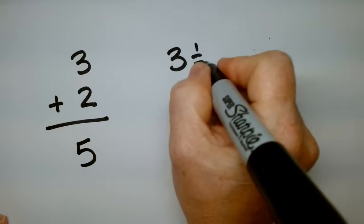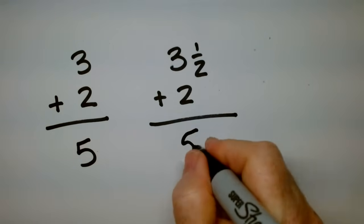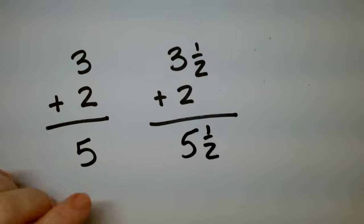What is 3 and a half plus 2? Just do it in your head. Yeah, if you have 3 and a half cookies and I give you two more, you have 5 and a half. So you just added a mixed number. You already know how to do this.